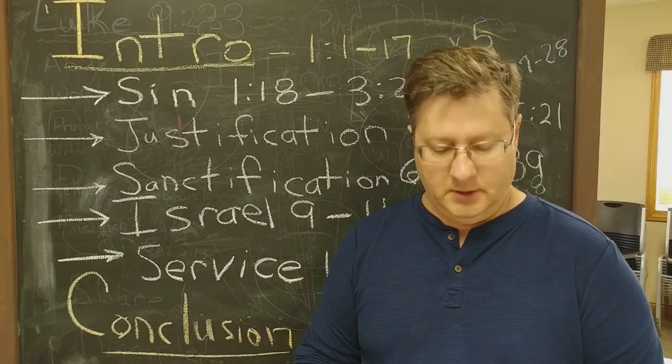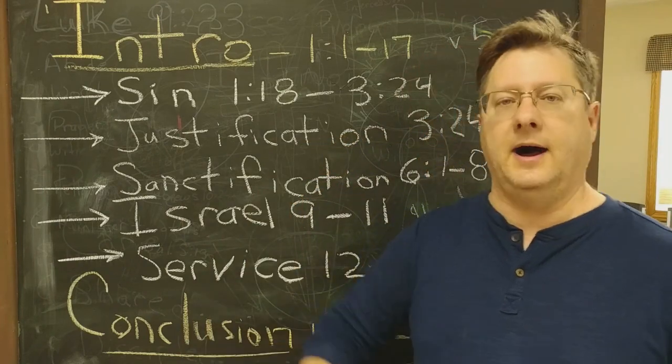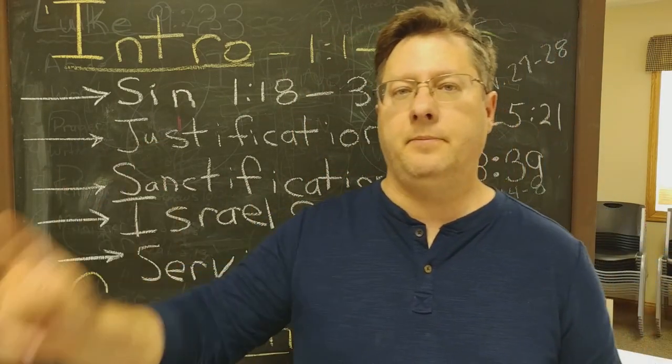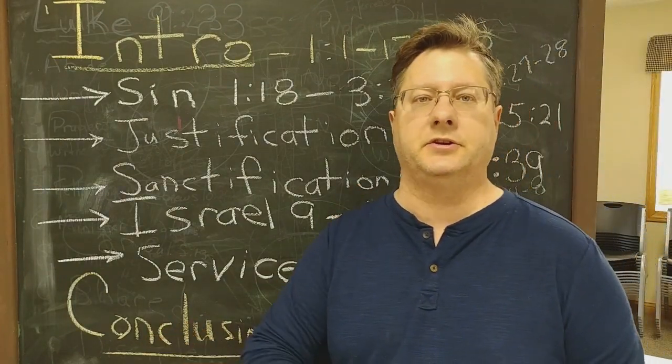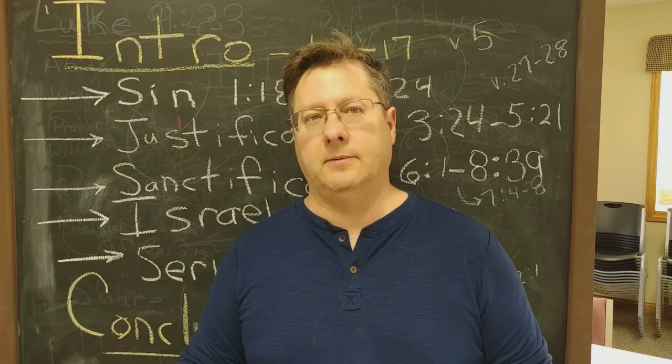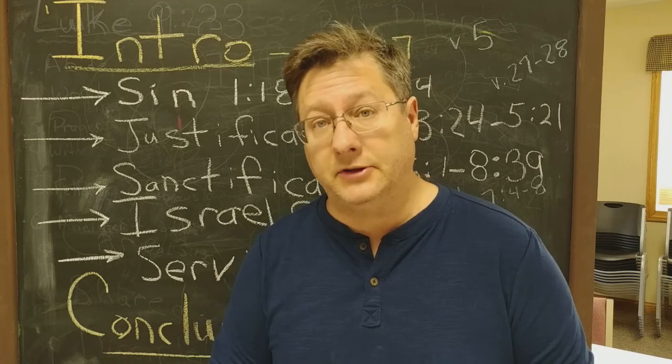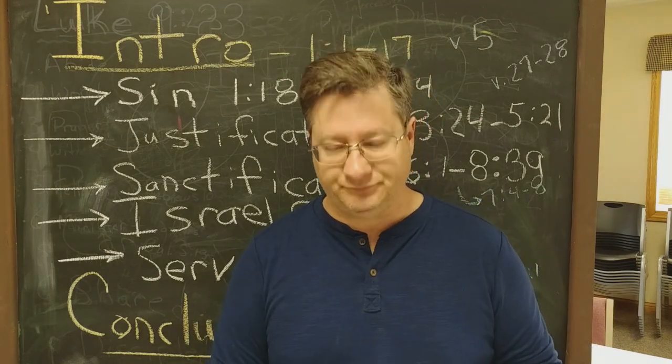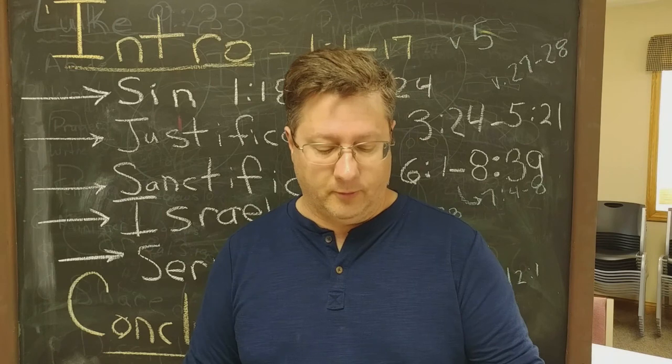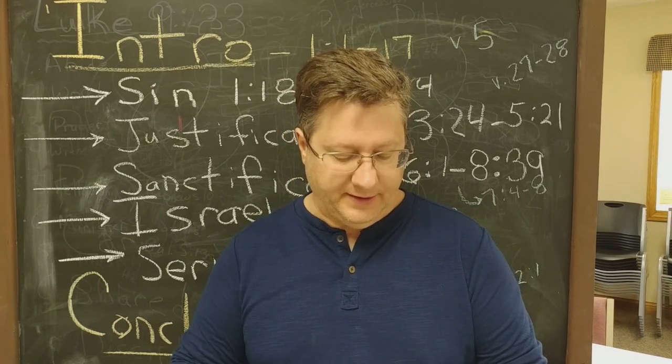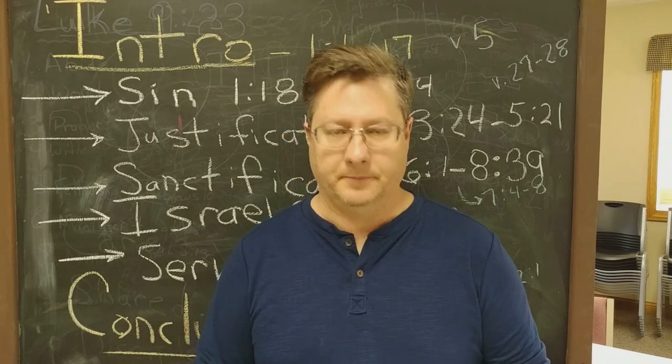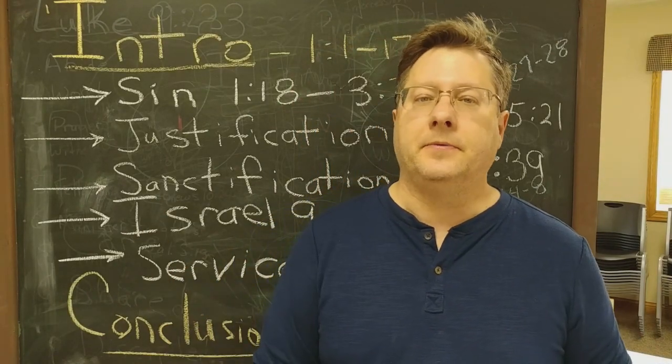He talks about Israel and he ends that. Then he moves in after all that's done and he's thinking about the mercies of God after he talks about Israel, his mercy upon the Gentiles and also upon the Jews. Then he goes into chapter 12 which begins the section on service. In chapter 12 on to the rest of the book he's talking about what we are to do, our duties, practical good works that we do. A key verse there is in chapter 12 verse 1: I appeal to you therefore brothers by the mercies of God to present your bodies as a living sacrifice holy and acceptable to God which is your spiritual worship.